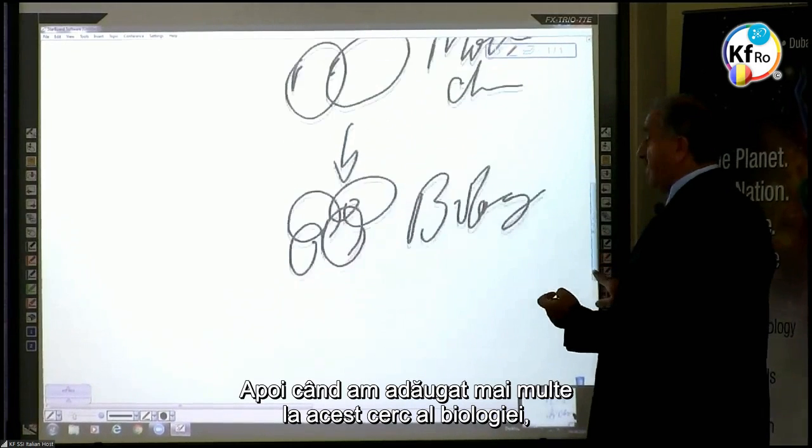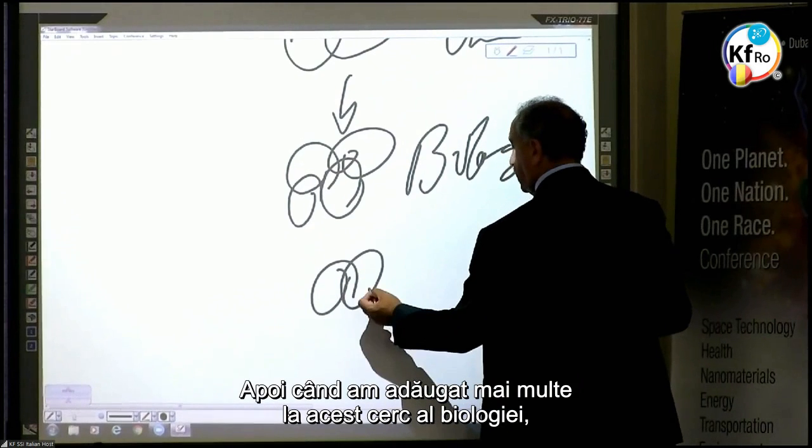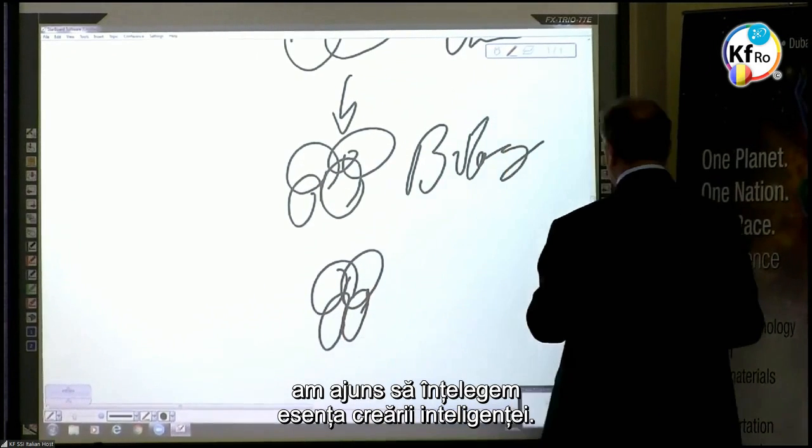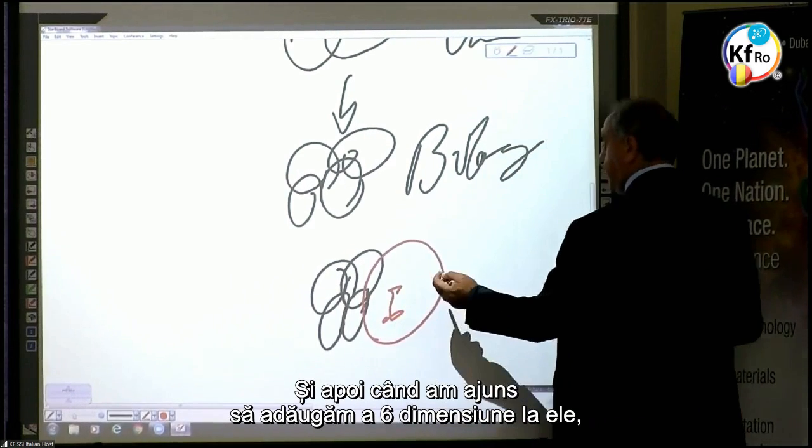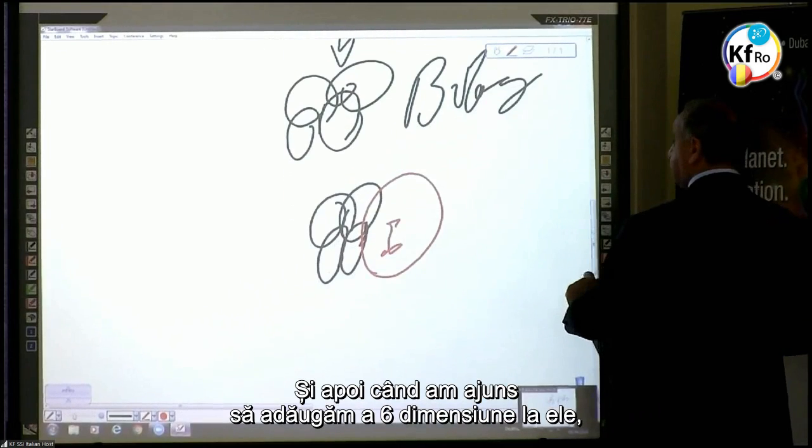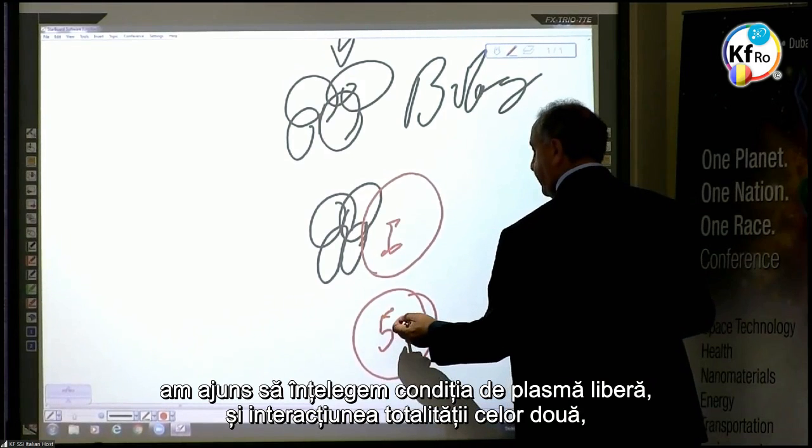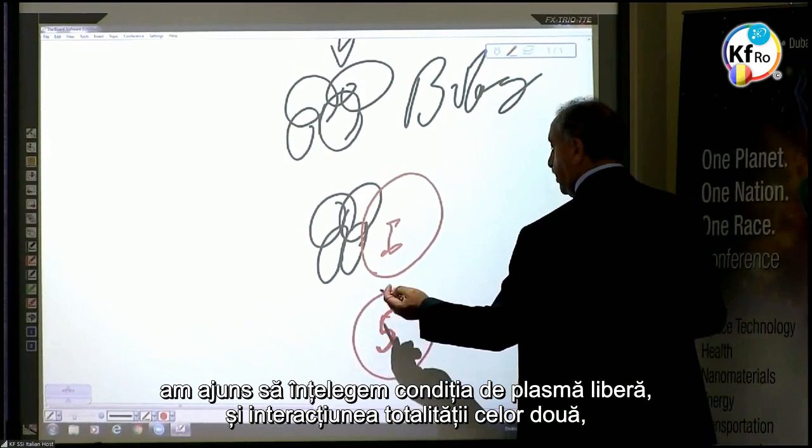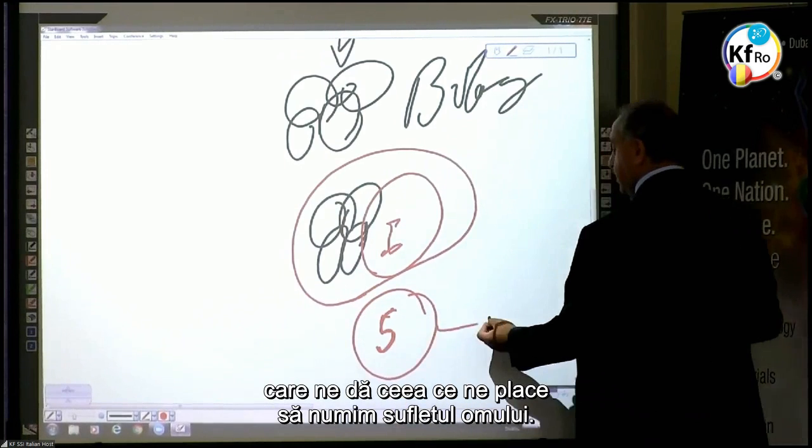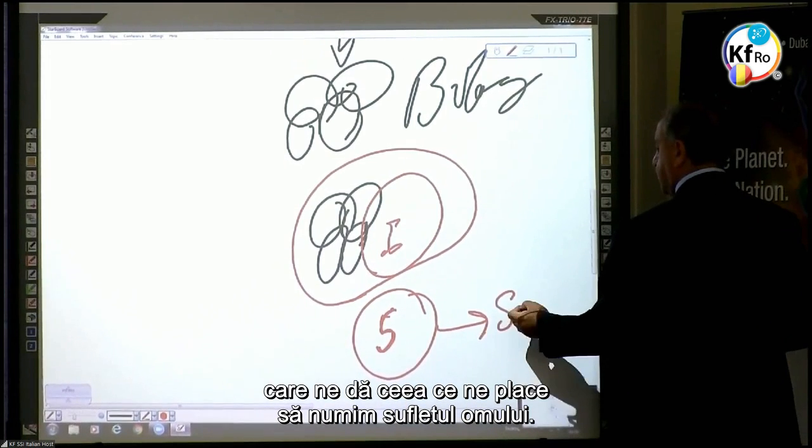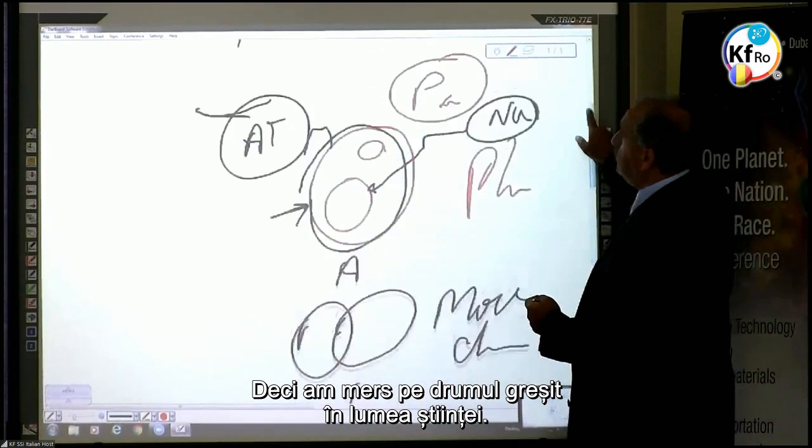When we added more to this circle of biology, we came to understand the essence of the creation of intelligence. When we add the six dimensions to it, we came to understand a free plasma, cognition, interaction of the totality of the two, which gives us what we would like to call the soul of the man. So we went the wrong way in the world of science.